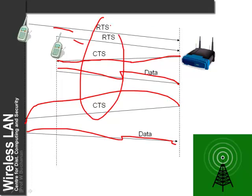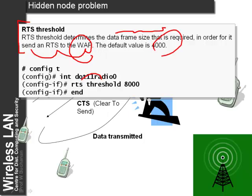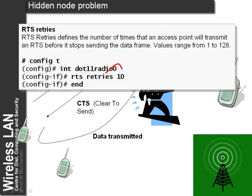The RTS and CTS signals are sent within the Ethernet frame. To manage this we can set up an RTS threshold, which defines the data frame size required before sending an RTS to the wireless access point — the default is around 4000 bytes. We can also set an RTS retry count, which is the number of retries the client will attempt before giving up on the data. This is applied within the D0 interface.